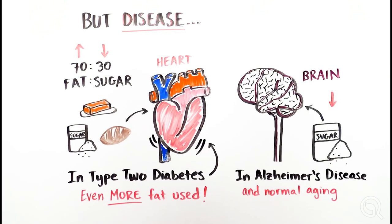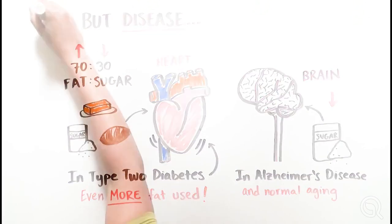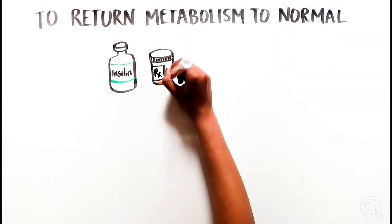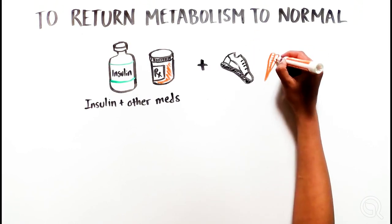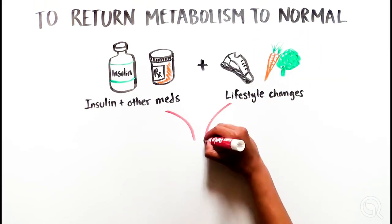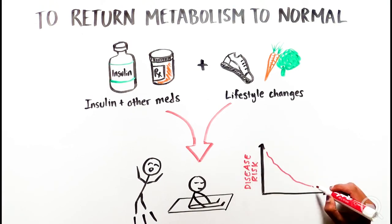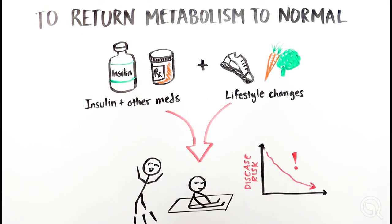This even happens to some extent in normal aging. Various medicines or changes to lifestyle can be used to return the metabolism to normal. Lifestyle changes can be powerful, such as improvements in diet or more exercise, as they not only improve disease symptoms, but also lower the risk for many other diseases.